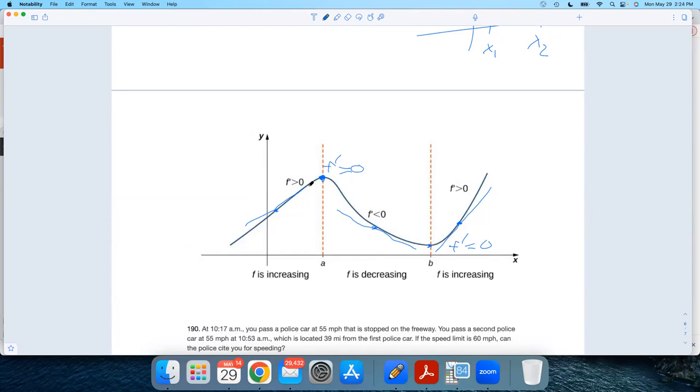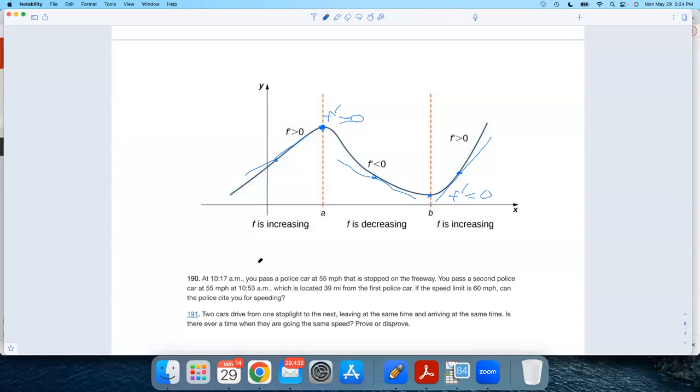So anytime I ask you where's a function increasing or decreasing, I always want open intervals. Don't worry about the endpoints. So I would say this guy is increasing on these two regions. That's negative infinity, assuming this goes all the way back up to A, open parenthesis, union. I'm increasing again from B to infinity. So that's all this stuff. The function is increasing. And then this function is decreasing in this region here from A to B. Again, open interval, parentheses. And it's not increasing or decreasing at A and B. It's not doing either.